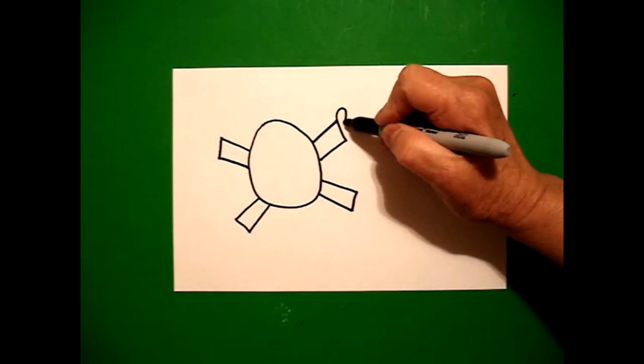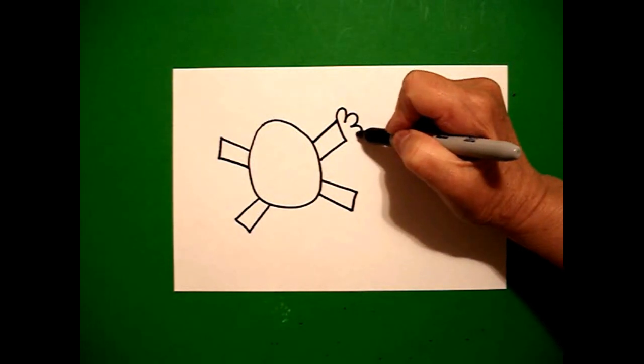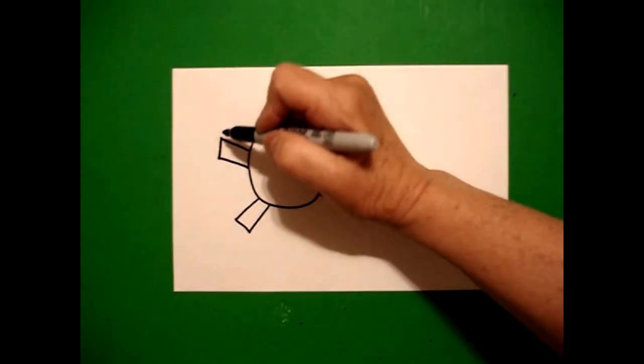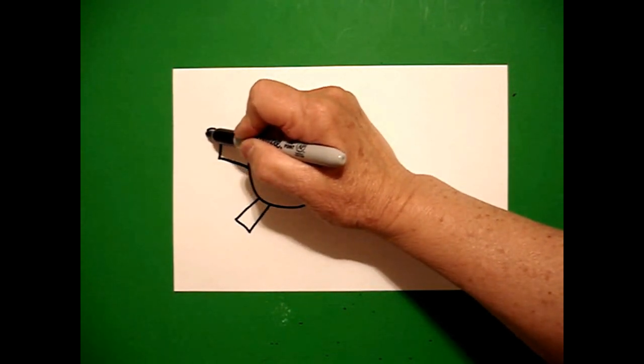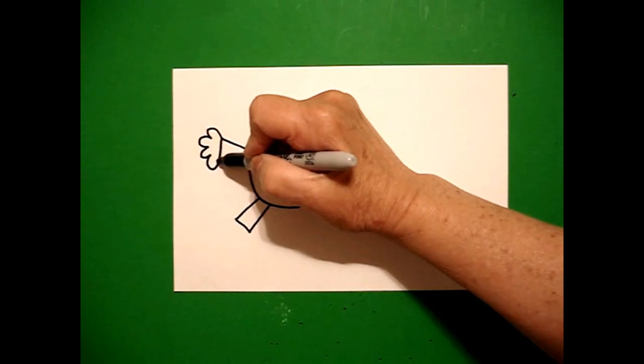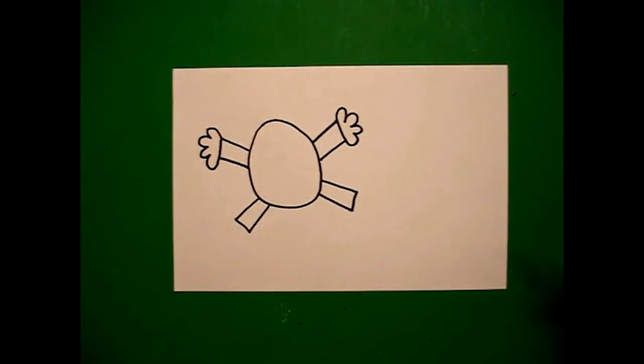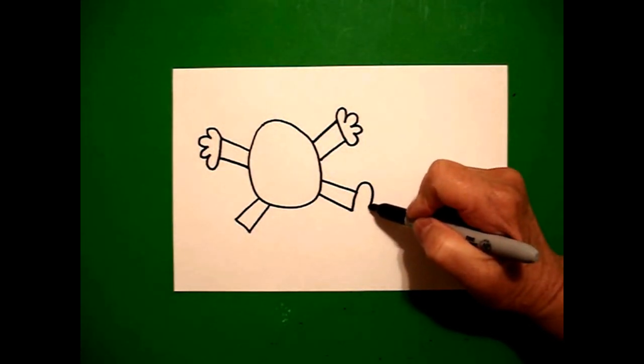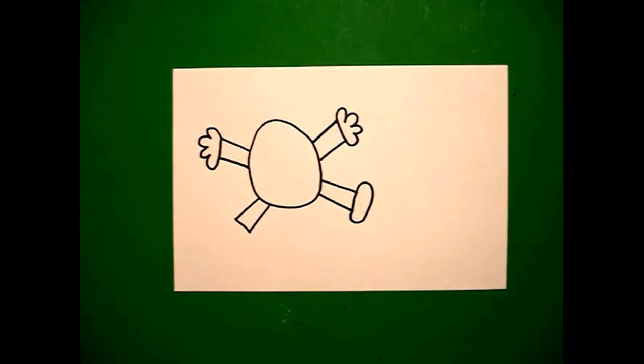Coming back over to the right, I draw a curved line. One, two, three, four, connect. And on the left-hand side I'm going to do it again. Curved line one, two, three, four, connect. I come back on the right and I draw a curved line out, down, over, connect.